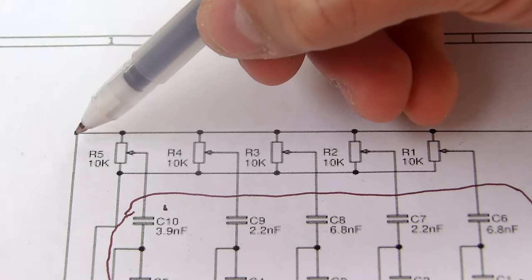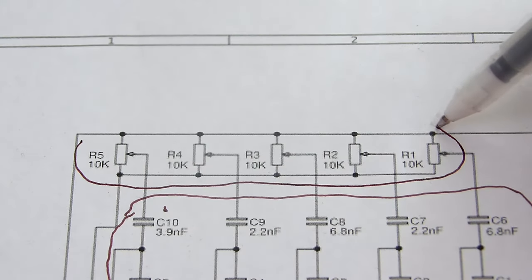To adjust the output of each band, a potentiometer is used, allowing independent adjustment of each band.